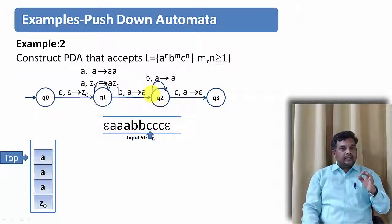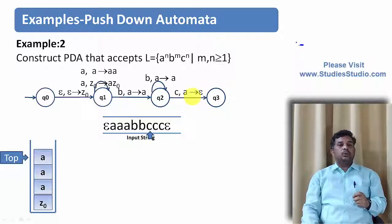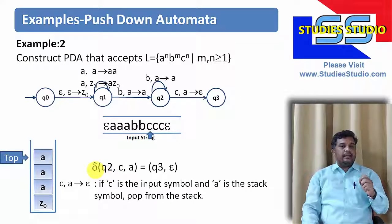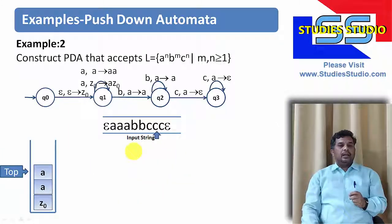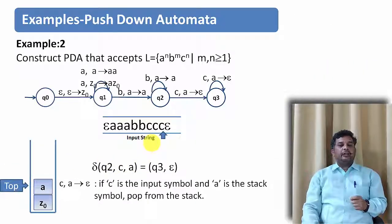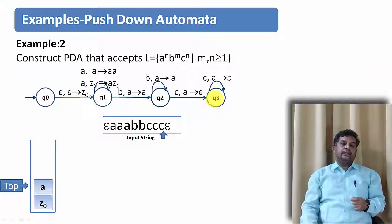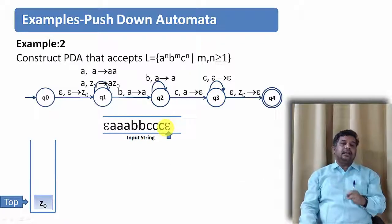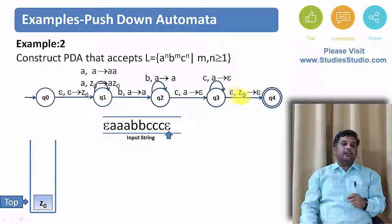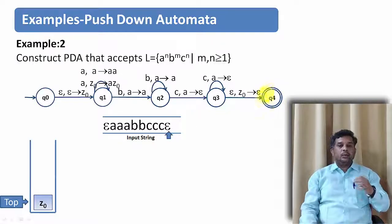When c appears as input, we are at state q2 with a on top of the stack — we pop it and move to state q3: δ(q2, c, a) = (q3, ε). For subsequent c's with a on top, we continue popping in state q3. Finally, when epsilon is the input and Z0 is on top of the stack at state q3, we pop Z0 and move to the final state: δ(q3, ε, Z0) = (q4, ε).